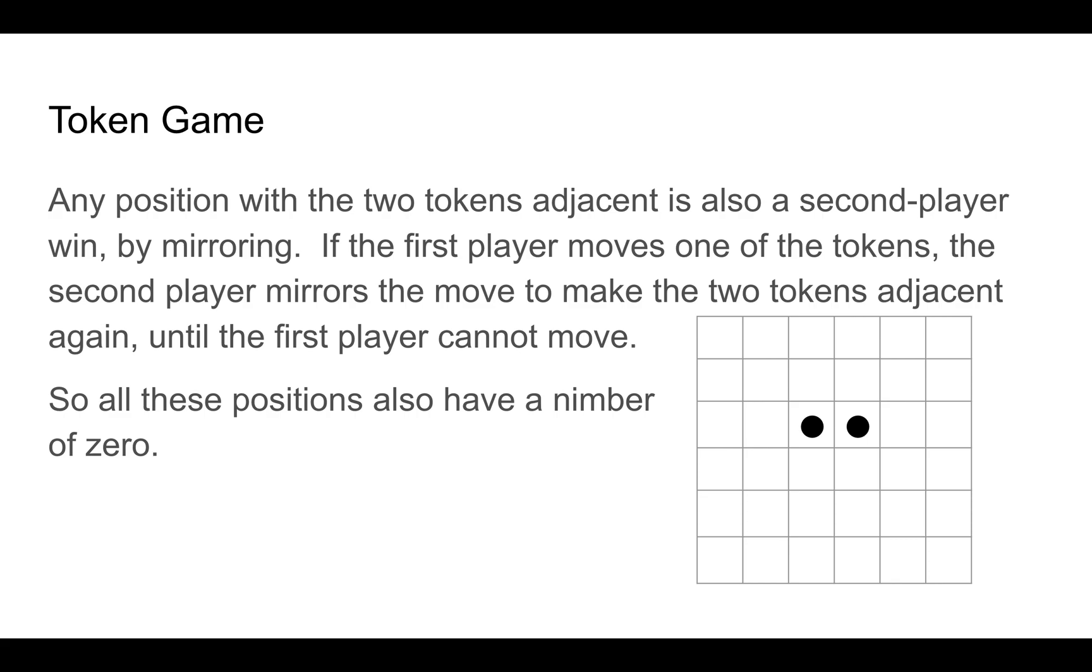If you think about it a little bit, any position with the two tokens adjacent is also a second player win. And the reason is because if the first player makes any move with either token, the second player can make an exactly corresponding move with the other token bringing it back to this adjacency requirement, but at a place closer to the origin. What this means is it's also a critical position and these positions also have a nimber of 0.